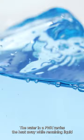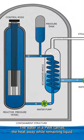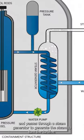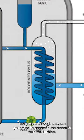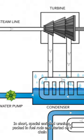The water in a PWR carries the heat away while remaining liquid and passes through a steam generator to generate the steam to turn the turbine. In short,